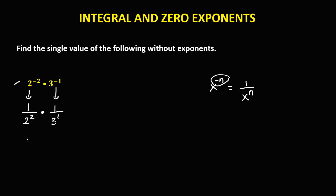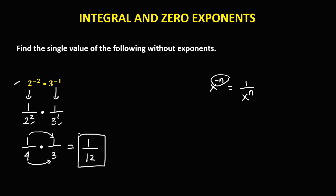Simplifying: 2 to the power 2 is 4, and 3 to the power 1 is 3. For multiplication of fractions, multiply the numerators — 1 times 1 is 1 — then multiply the denominators — 4 times 3 is 12. So the answer is 1 over 12.